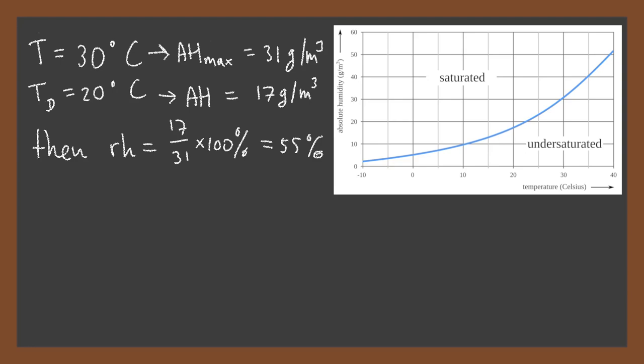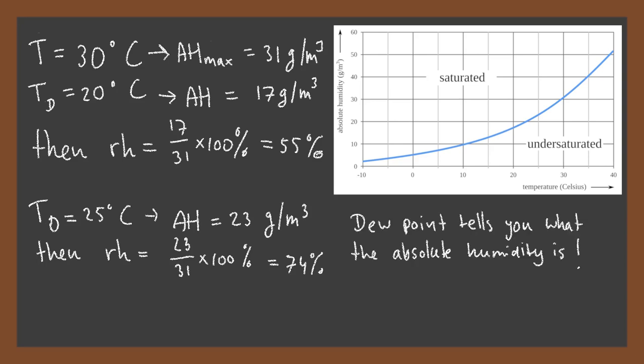If the dew point would have been 25 degrees instead, then the absolute humidity would be 23 grams per cubic meter and the relative humidity 74%. You see, the higher the dew point, the more water vapor there is in the air and the higher the relative humidity. Important to remember, the dew point tells you what the absolute humidity is.